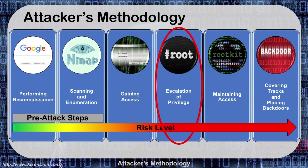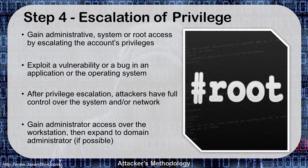The next step is escalation of privileges. If I was successful in gaining access, I now have a user account most likely, and I want to elevate that to admin, system, or root access so I can get complete access in the system. I can do this through exploiting a vulnerability or bug in an application or the operating system. One of the most famous examples is an old one for Windows XP and Windows Server 2003 — Microsoft MS08-067, a vulnerability exploited by the Conficker worm — which allows us to take over a computer as a system-level user.